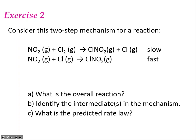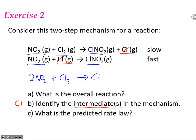In your two steps, identify intermediates and catalysts — those are the ones that cancel out and are not part of the overall reaction. I can see there's Cl here and Cl there; that Cl would be identified as an intermediate — it is produced in the first step and then consumed in the second step, so it cancels out. Adding up the remaining reactants: 2NO₂ + Cl₂, and the products: 2ClNO₂. That's the overall balanced reaction.